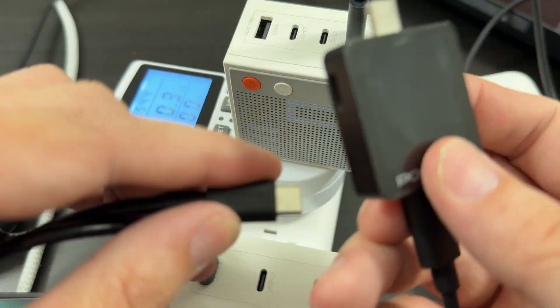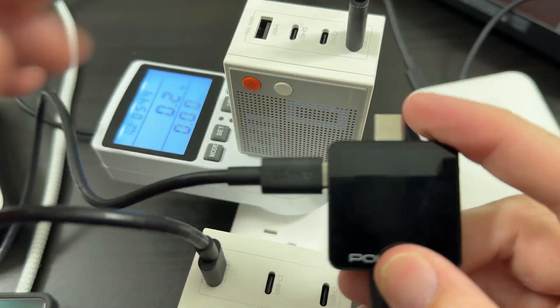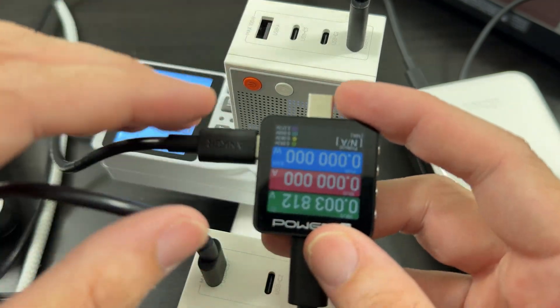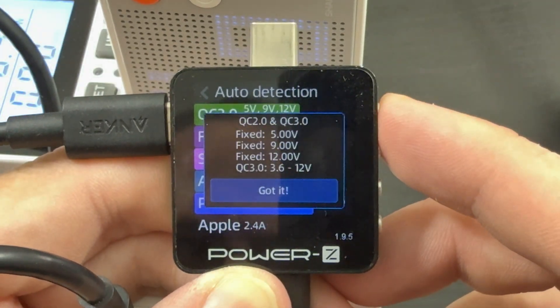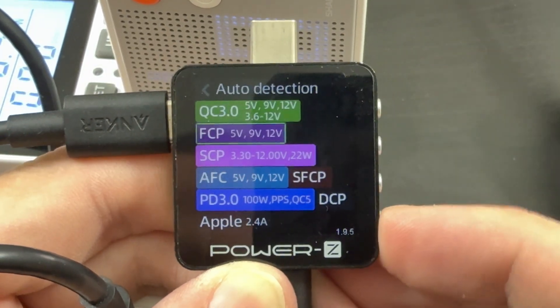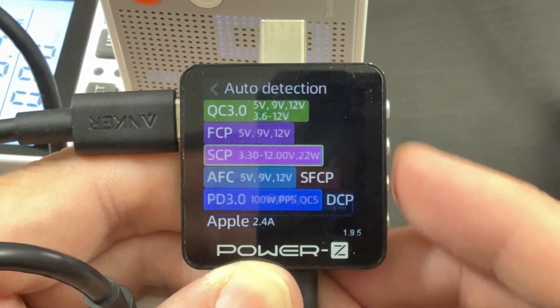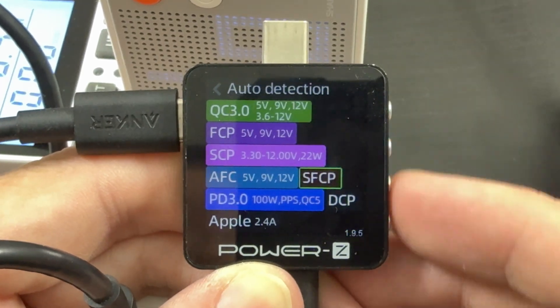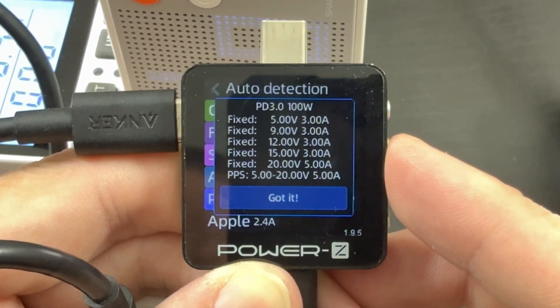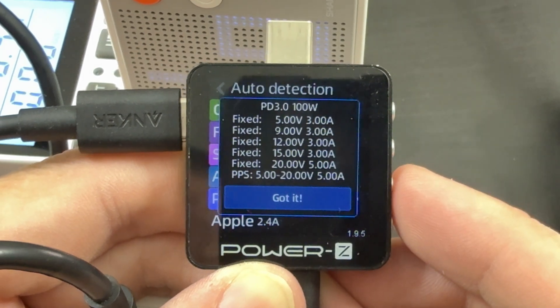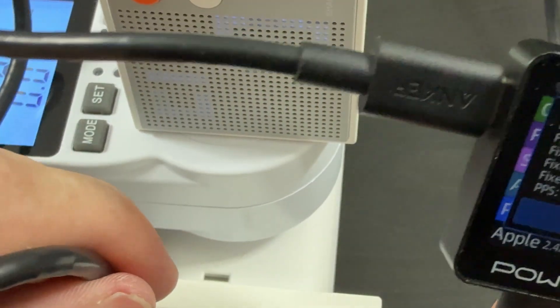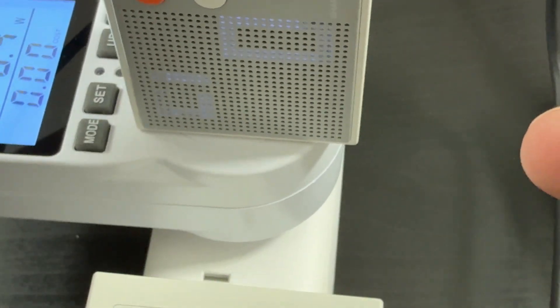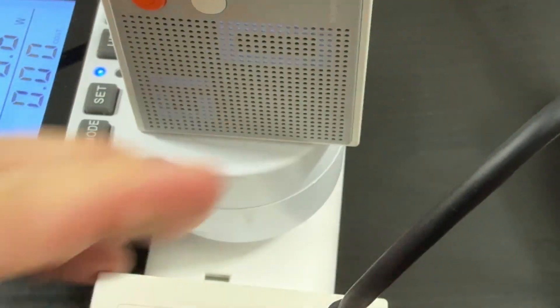Before we end the video, we're going to test all the protocols this thing has to offer. So right now we're using the 100 watt one. All right. And we've got some information here. We've got quick charge three. We have FCP. We have SCP. We have AFC. And most importantly to me, we've got PPS 5 to 20 volts at 5 amps. So pretty good. Now what we're going to do is basically flip these ports around and see what all the 140 watt one can do.